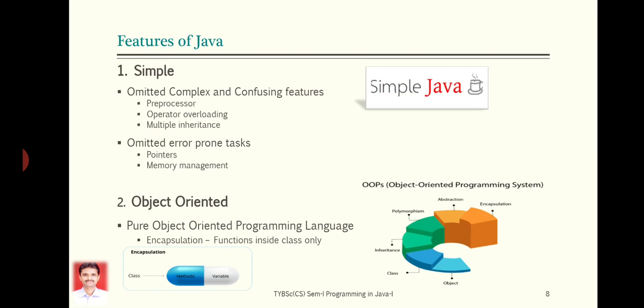Java is simple. Yes, it is simple as compared to C++ language. Because Java has omitted features, some features which are complex and confusing which were used in C++, like preprocessor, operator overloading, multiple inheritance, etc. There are some error prone tasks such as pointers and memory management. Those tasks have been eliminated in Java explicitly. We need not have to define pointers. We need not have to manage the memory. Java internally handles the pointers as well as memory management features. So Java is more simpler than C++.